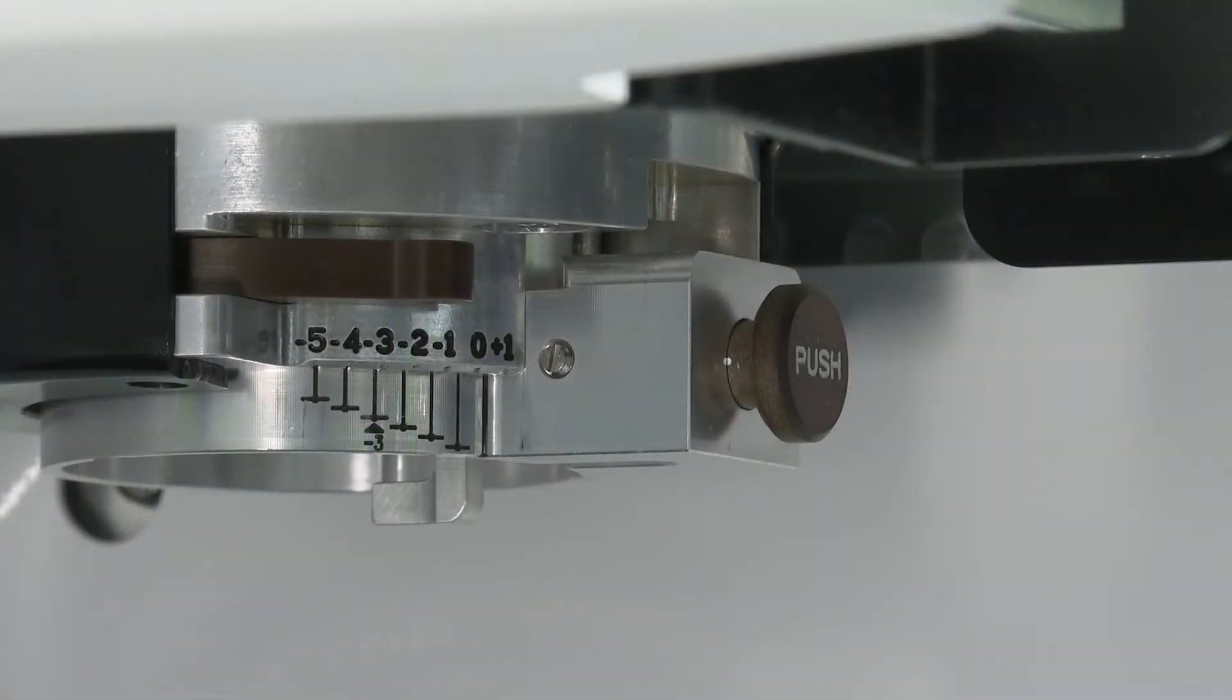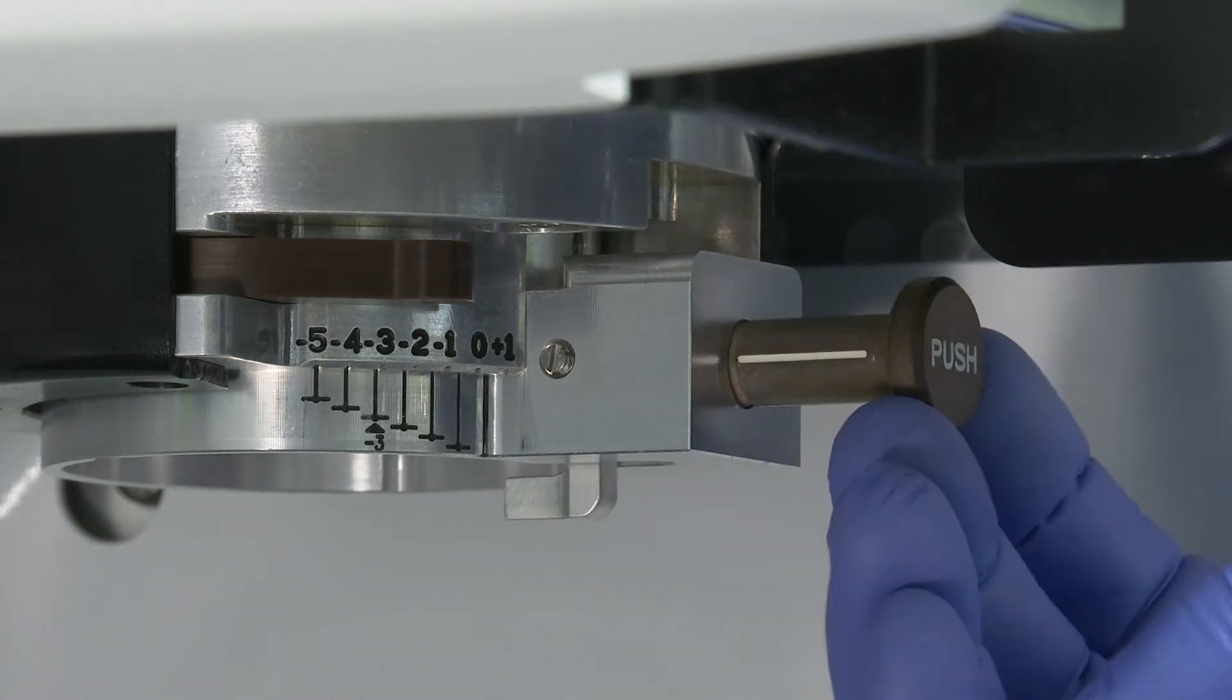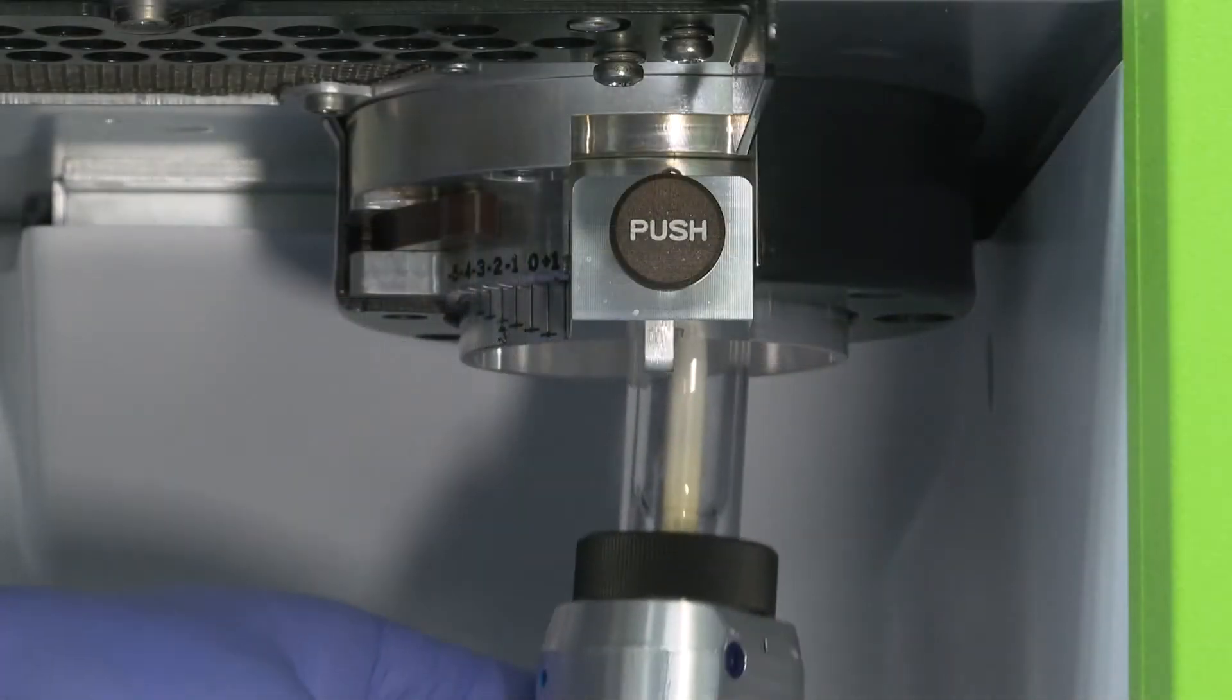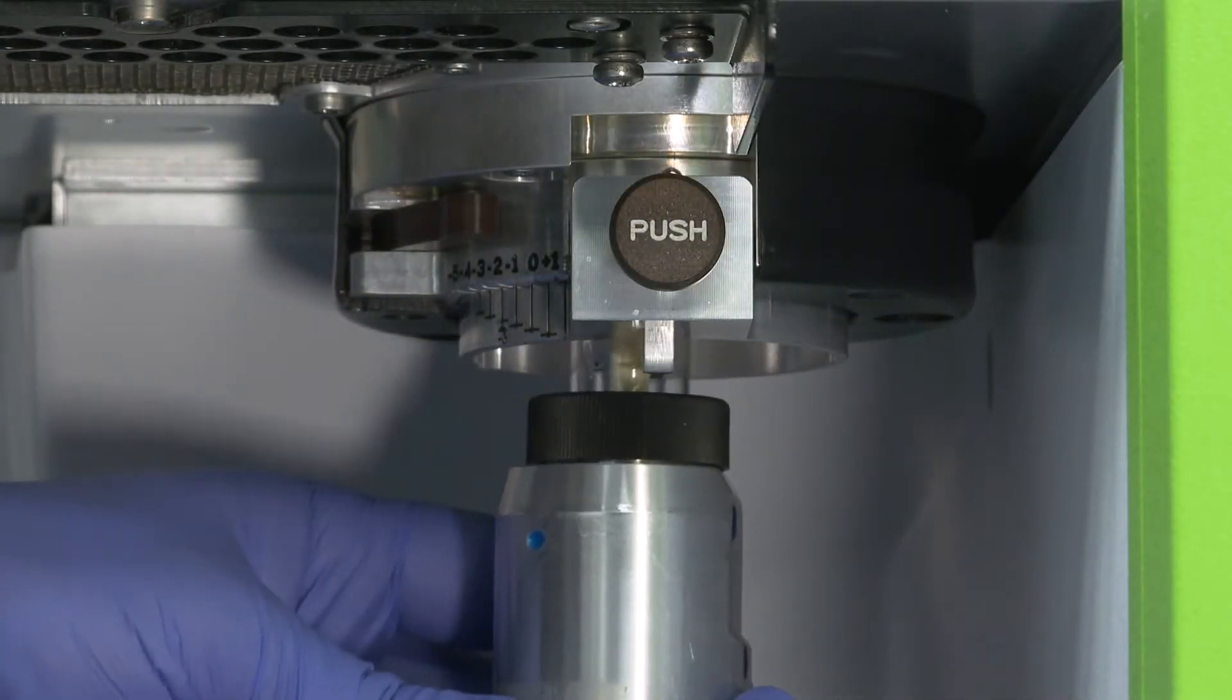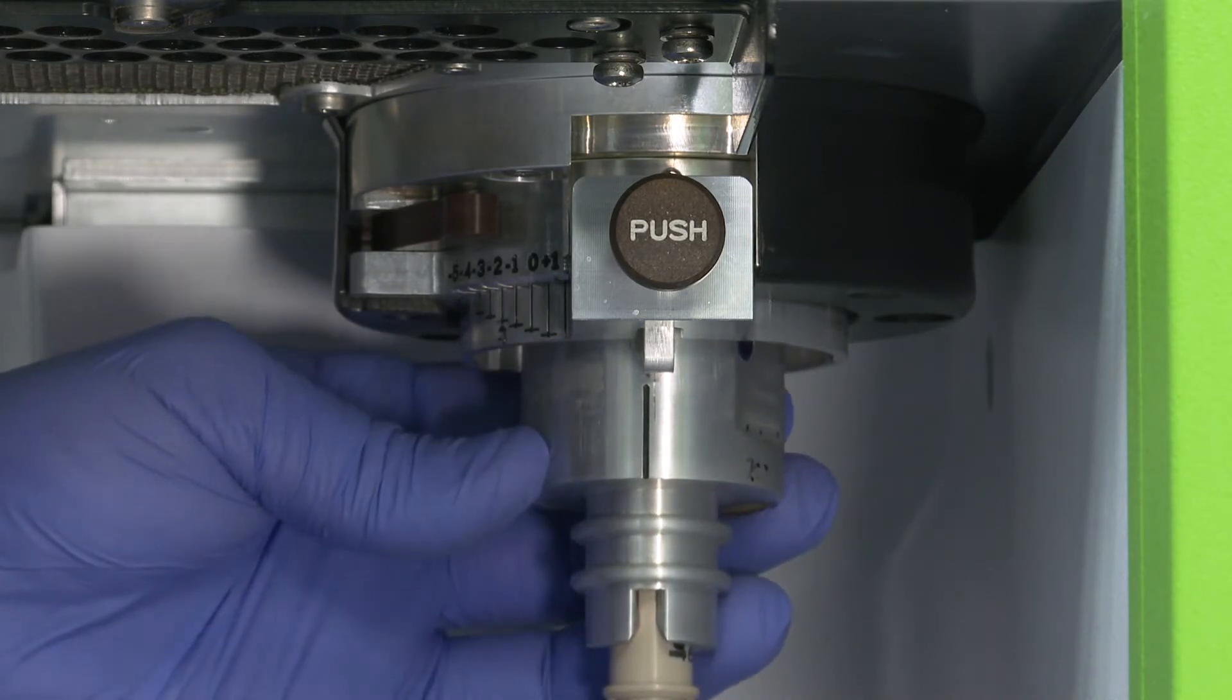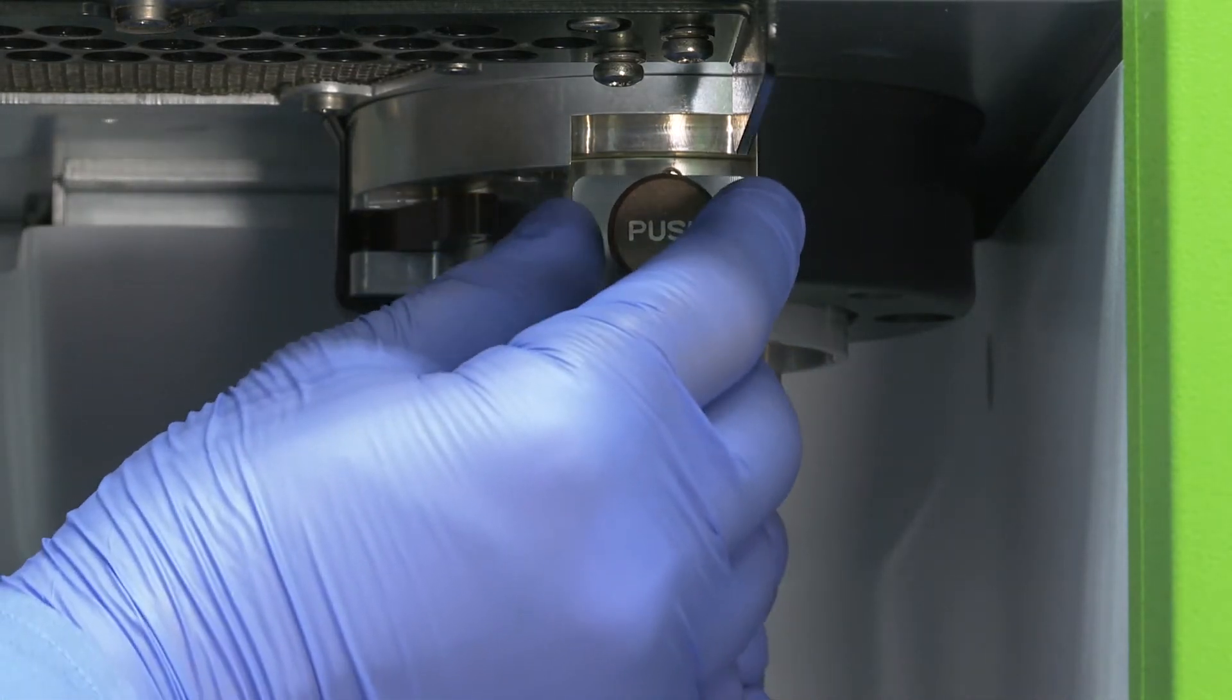Before inserting the torch module into the torch mount, verify that the torch locking pin on the torch mount is pulled fully outward. Rotationally align the torch module so the long vertical alignment line on the torch holder body is centered with the torch locking pin.